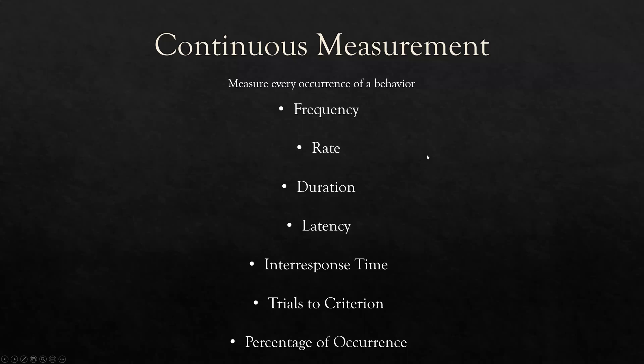Quick intro: continuous measurement — frequency, rate, duration, latency, inter-response time, trials to criterion, and percentage of occurrence. The first five are what you're going to be using most often. Trials to criterion and percentage of occurrence are used less often, but still useful in certain circumstances. The important thing to remember about continuous measurement is you're measuring every occurrence of a behavior. Contrast that to discontinuous measurement where we're taking a sample of behavior or only measuring during a certain interval. With continuous measurement, if you work an entire day, you're measuring throughout the entire day.